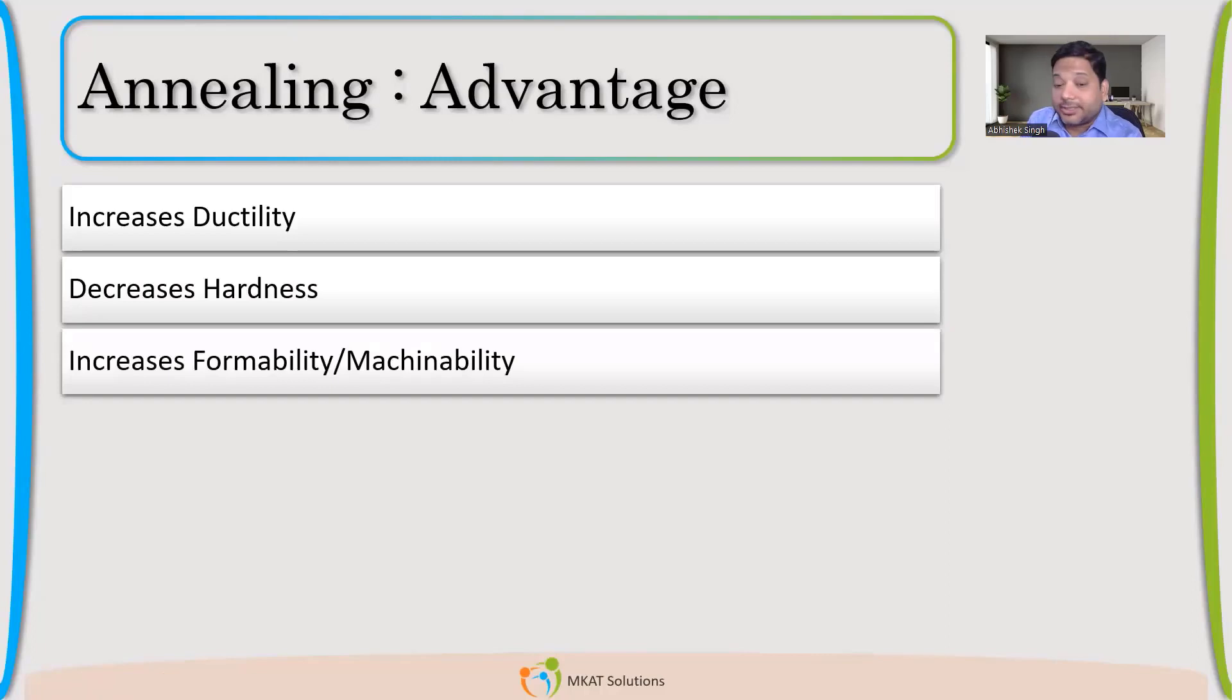Machinability, like we discussed that it will increase. Even if you are observing that during the formation, the forming of that material, like if you want to make a shell or addition and the material is cracking. So if we do annealing, the material will become more formable. It will become more machinable. So these are the added advantage we get with annealing.